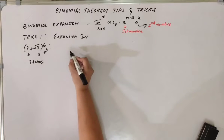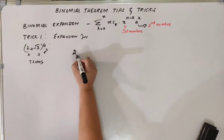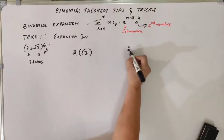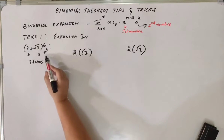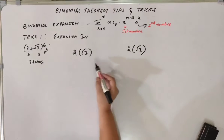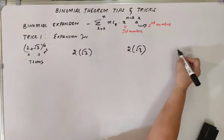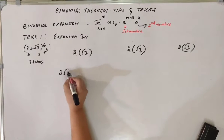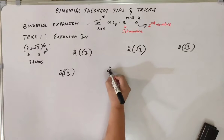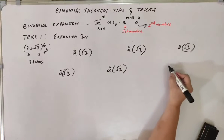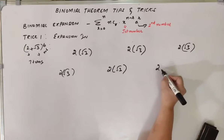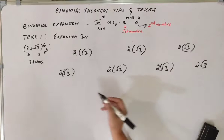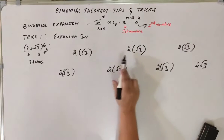So what we are going to do is, we will first write the first term, 2, and the second term, root 3. Then we write both together: 2 and root 3. Since n is equal to 6, which means we will have 7 terms, so we will write the pair 2 into root 3 seven times.